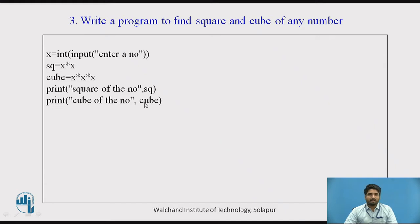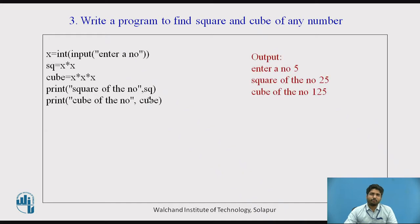And 'Cube of a number', showing the cube of a number. The output would be: enter a number — if a user enters 5, it calculates and shows 'Square of a number is 25' and 'Cube of a number is 125'.